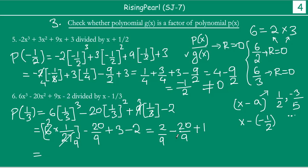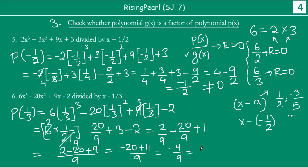So solving with 9 as your denominator: 2 minus 20 plus 9, which gives 2 plus 9 is 11, then minus 20 plus 11 gives minus 9/9, which simplifies to minus 1. So when you divide this polynomial by x minus 1/3, the remainder is minus 1, which is not equal to 0. Therefore, this polynomial is not a factor of 6x cubed minus 20x squared plus 9x minus 2.